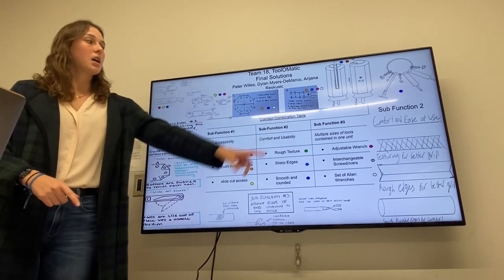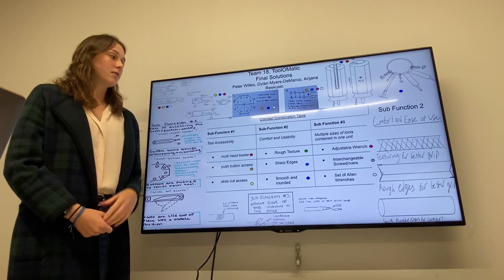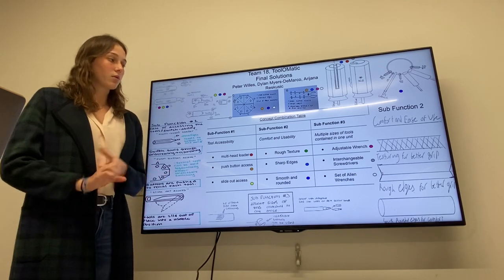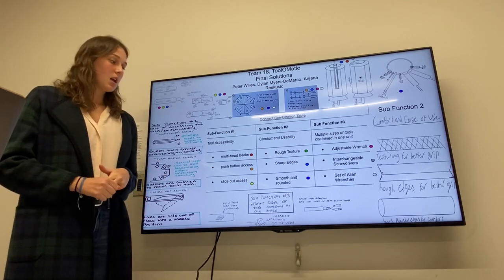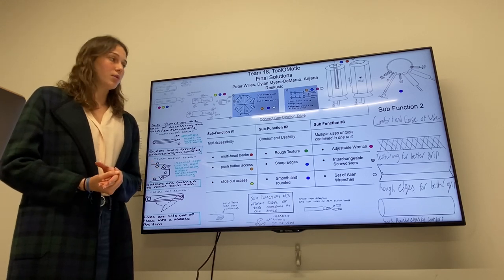Sub-function two is on that side. We have the comfort and ease of use, the usability. There's the rough texture, sharp edges, and smooth and rounded, which provides more comfort for the user.